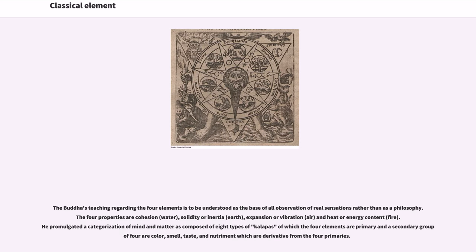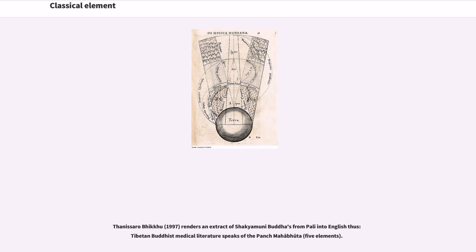The Buddhist teaching regarding the four elements is to be understood as the base of all observation of real sensations rather than as a philosophy. The four properties are cohesion, water, solidity or inertia, earth, expansion or vibration, air, and heat or energy content, fire. He promulgated a categorization of mind and matter as composed of eight types of kalapas of which the four elements are primary and a secondary group of four are color, smell, taste, and nutriment which are derivative from the four primaries.